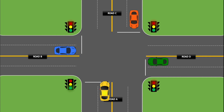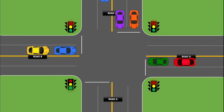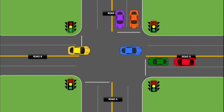This is the animation video I have prepared for the simulation. As you can see, the green light at road A's traffic light is already lit up and will stay for 10 seconds. Then the yellow light will light up for 3 seconds before it turns to red. Now the green light at road B will light up and the car is already moving.